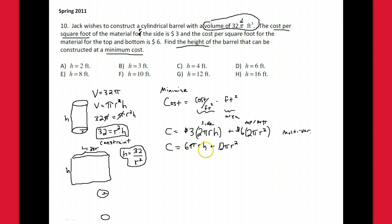Take that and plug it in—replace the h in your cost equation. You'll have 6πr times 32 over r², and then the 12πr² as well.